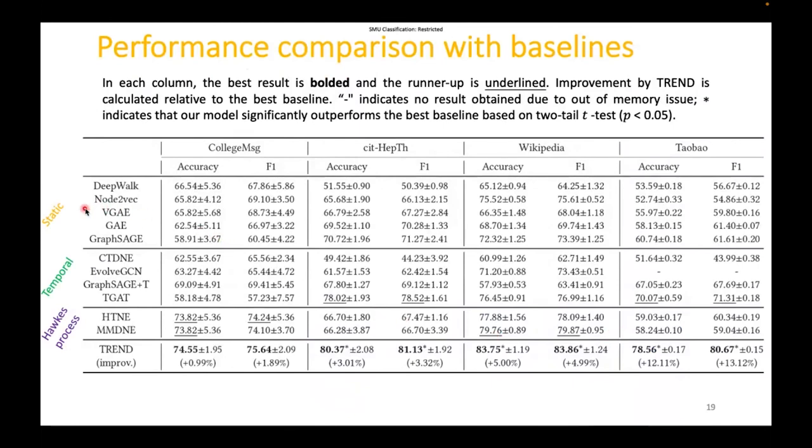We compare TREND with a competitive set of baselines from three categories. First one is static approaches learning on the static graph formed from the training events without considering any temporal information. Second category, temporal approaches learning on the temporal graph. Third one, Hawkes process based approaches. They similarly train on the temporal graph. However, they leverage the node representation to model the conditional intensity of events based on the Hawkes process. As can be seen, in general, our model performs the best among all methods, demonstrating the benefits of event and node dynamics.